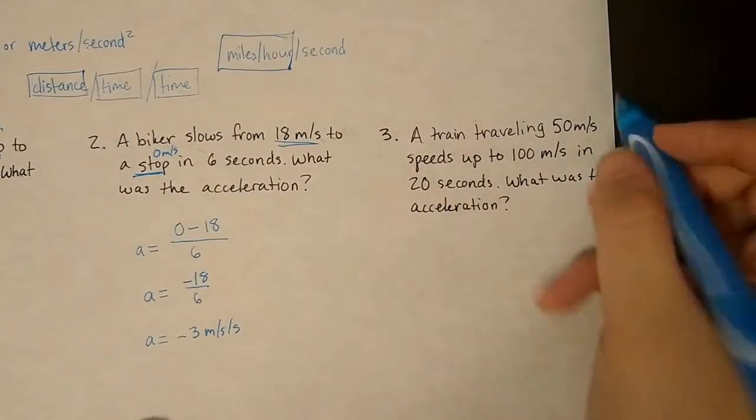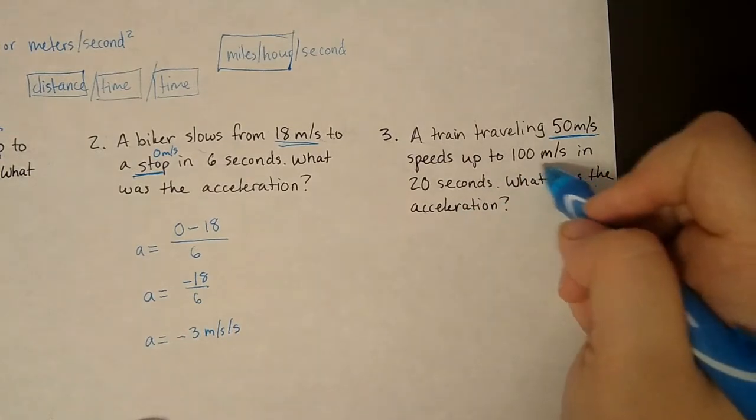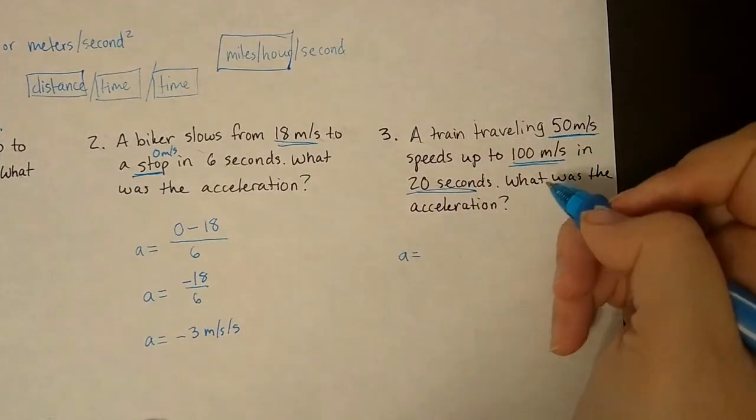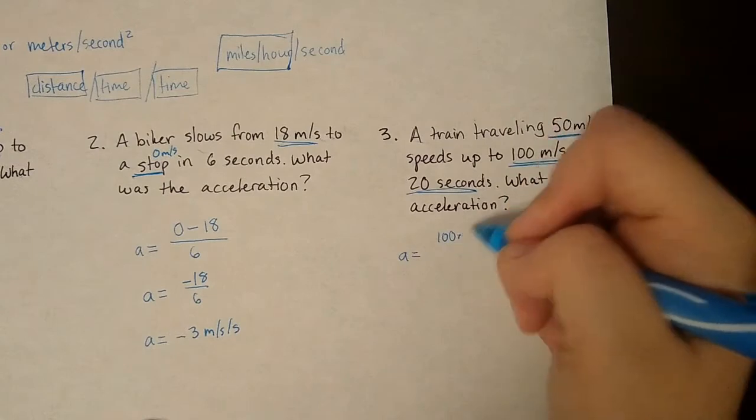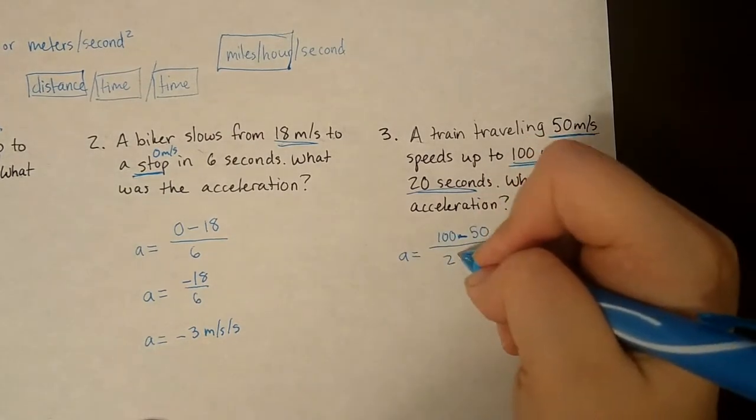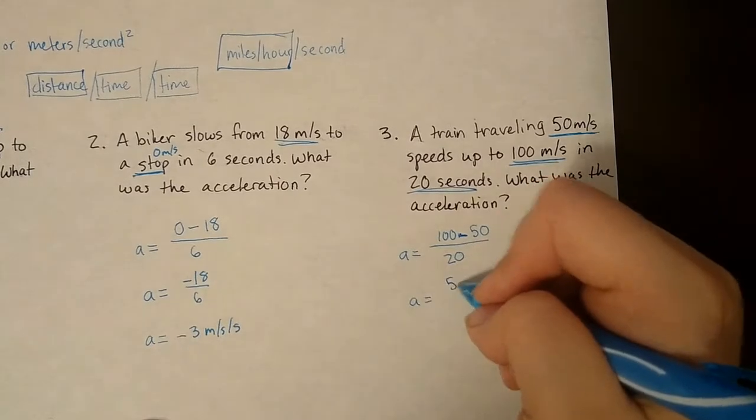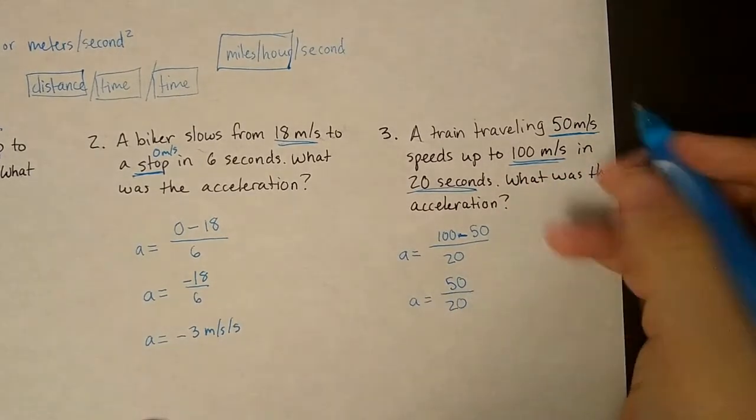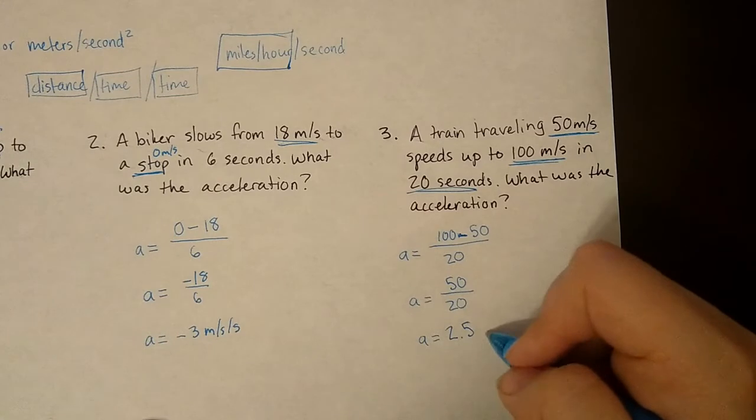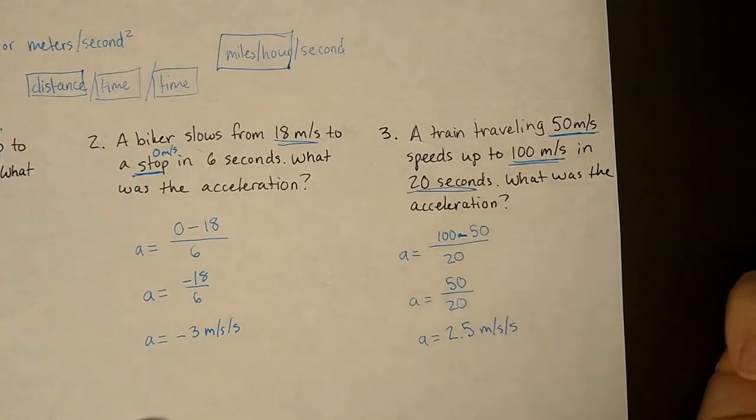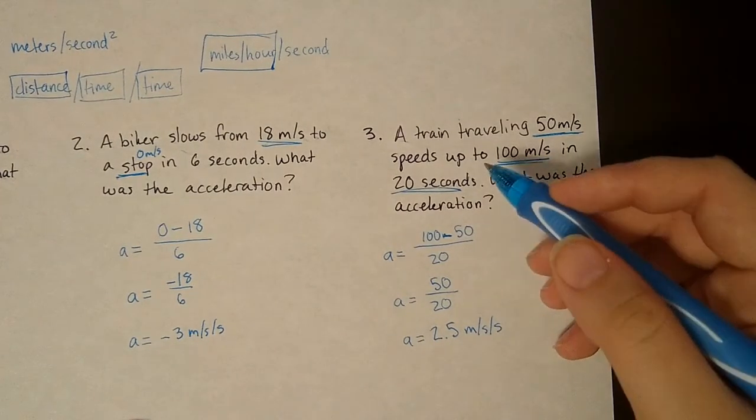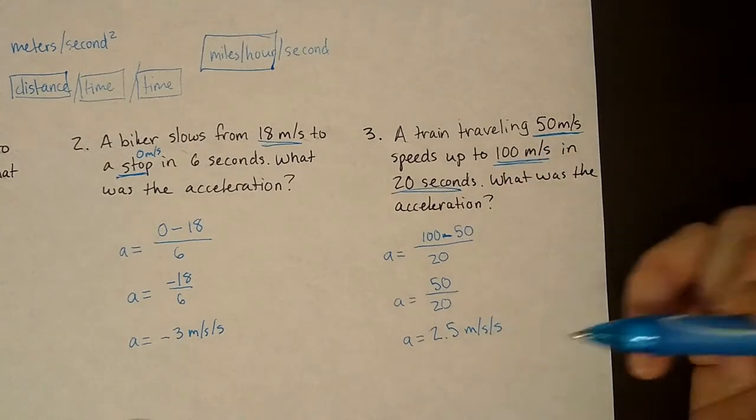Here we go. A train traveling 50 meters per second, that's our start, speeds up to 100 meters per second in 20 seconds. What is the acceleration? A equals final velocity, 100 meters per second, minus 50, our initial, divided by 20. Acceleration is 50 over 20. So our acceleration is 2.5 meters per second per second. Double check my math if you would like to. It means every second the train was speeding up by 2.5 meters per second.